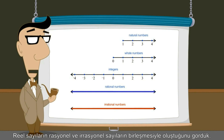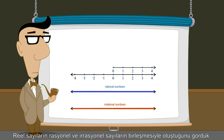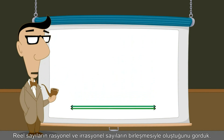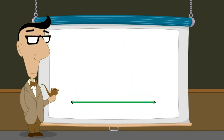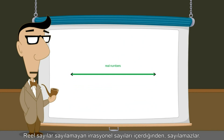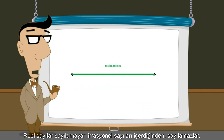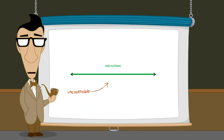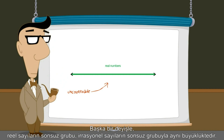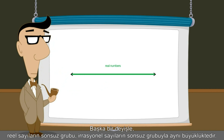We saw that real numbers are formed by combining the rational numbers and the irrational numbers. Since real numbers include irrational numbers, which are uncountable, real numbers are also uncountable. In other words, the infinite collection of real numbers is the same size infinity as the infinite collection of irrational numbers.